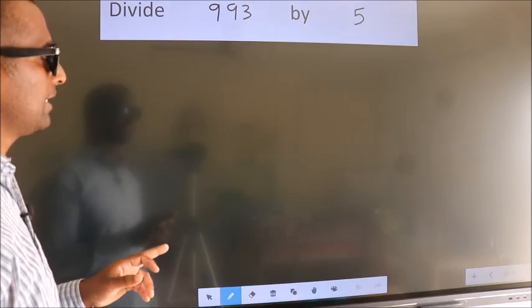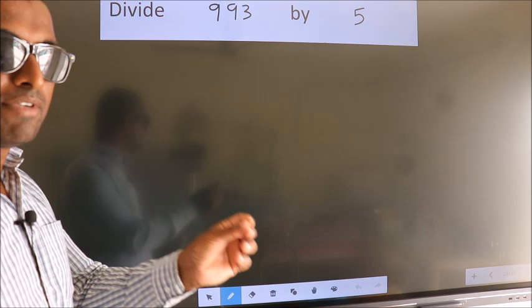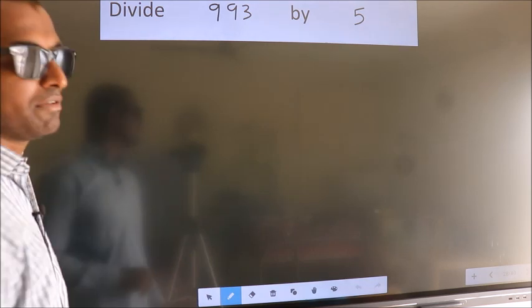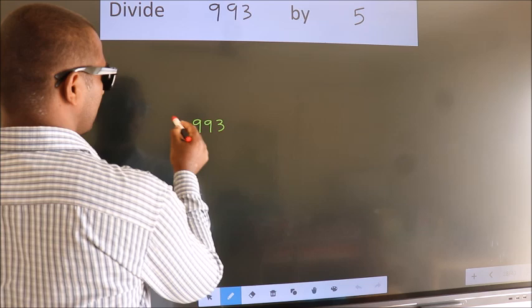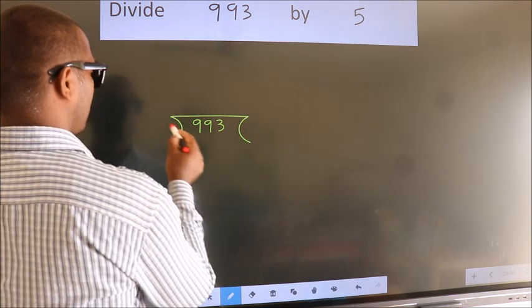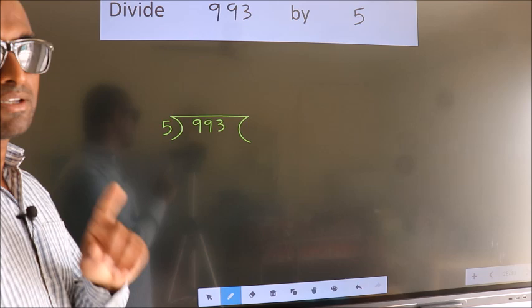Divide 993 by 5. To do this division, we should frame it in this way. 993 here, 5 here. This is your step 1.